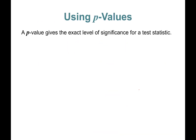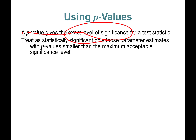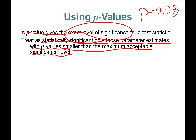Now the long story: a p-value gives you the exact level of significance of a test statistic. Treat a coefficient as statistically significant only if its p-value is smaller than the maximum acceptable significance level. For example, a p-value of 0.08 means this coefficient estimate is significant at the 8% level — less than 10% — so you can say it is statistically significant at the 10% level, but not at the 5% level.